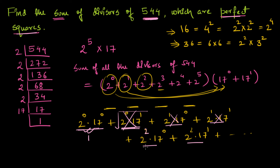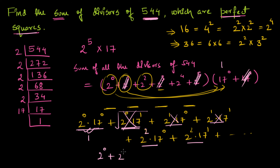To find the perfect square factors, we remove all terms with odd powers. So we remove 2⁵, 2³, 2¹, and 17¹ from the expression. 17⁰ is just 1, so it doesn't matter. Finally we are left with (2⁰ + 2² + 2⁴) × (17⁰).